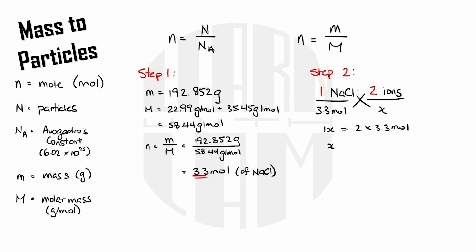Alright last step, you got this. Now that we know how many moles of ions we have we can simply run it through the particle equation because remember that ions like atoms and molecules are types of particles. So moles is 6.6 moles and Avogadro's constant is as always 6.02 times 10 to the 23 and big N equals little n times NA so 6.6 moles times 6.02 times 10 to the 23 and that gives me 3.9732 times 10 to the 24 ions and that's all there is to it.